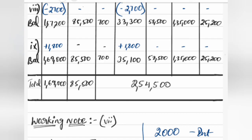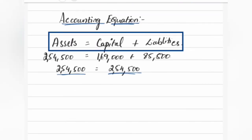Now we balance for the last time — bring everything to the total column. Here we have ₹1,69,000, here ₹85,500, and 5 asset items totaling. We go to the total column — total assets is ₹2,54,500. We check the accounting equation: assets equals capital plus liabilities. Capital plus liabilities totaled equals assets totaled — they are the same. This is mark scoring.